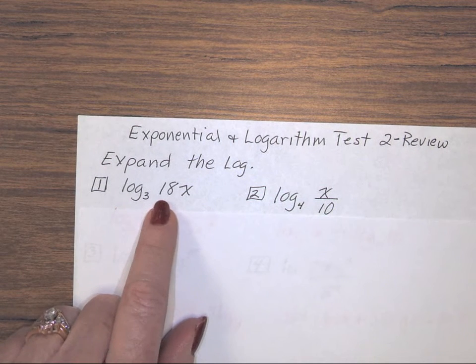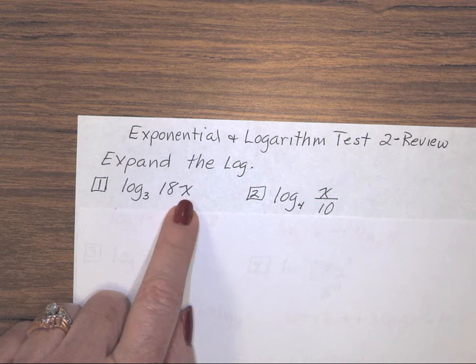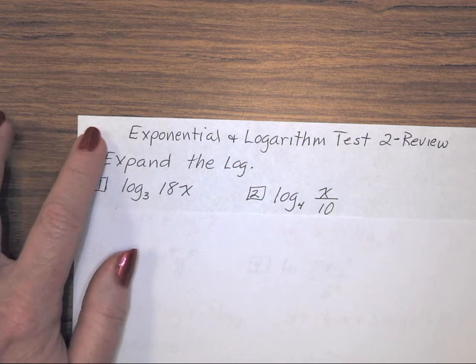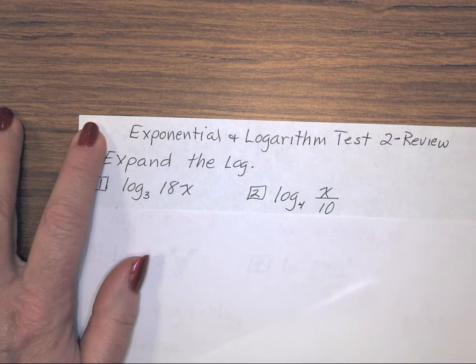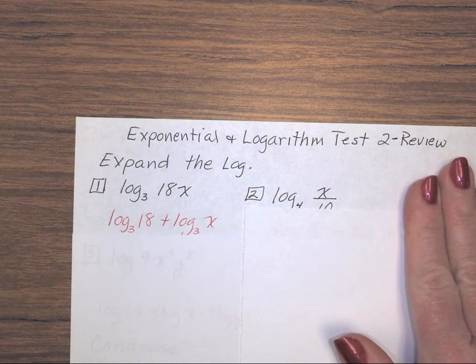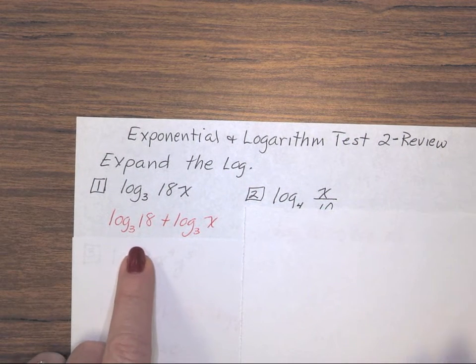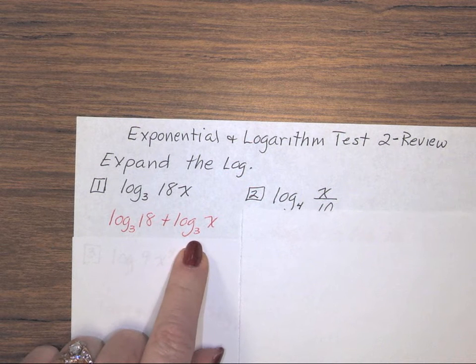Remember on the first one, when you have a log of values that are being multiplied, when you expand, it's written as two separate logs that are added. So we have log base 3 of 18, plus log base 3 of x.